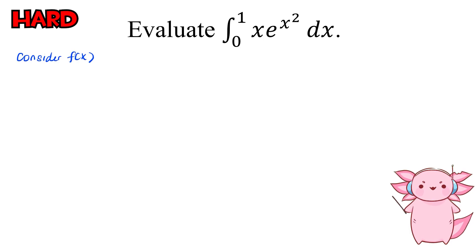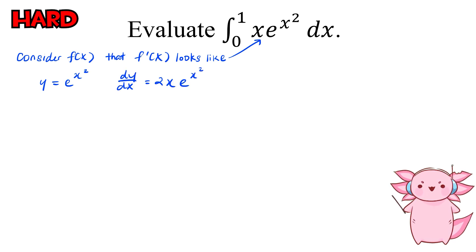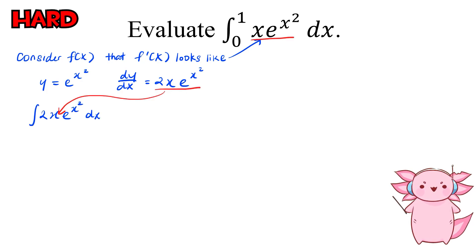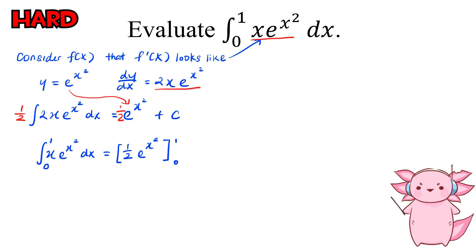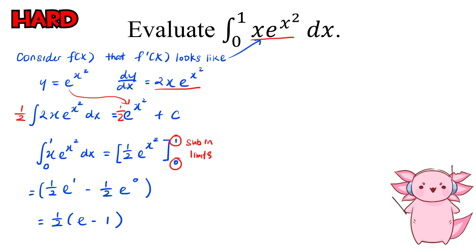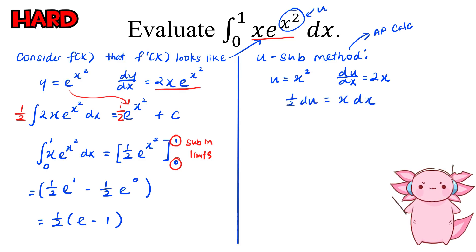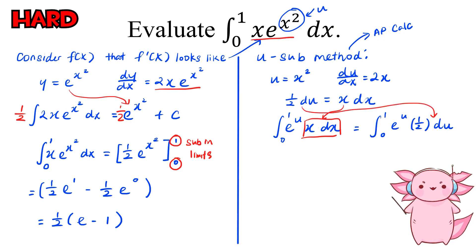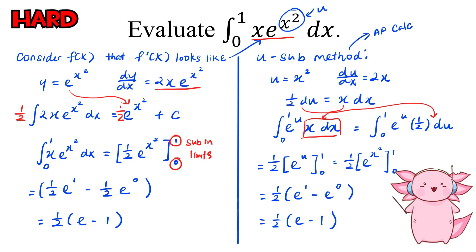For this integration question, we consider a function that when differentiated gives something similar to what we want to integrate. Let's try y equals e^(x²) — differentiating gives 2x·e^(x²), which is really similar. Dividing both sides by 2, our integral equals ½e^(x²), and subbing in limits from 0 to 1 gives the final answer of ½(e minus 1). The u-substitution method: let u equals x², so du/dx equals 2x, and ½du equals x·dx. We replace x·dx with ½du and integrate to get e^u, then sub back in terms of x to get the same answer.